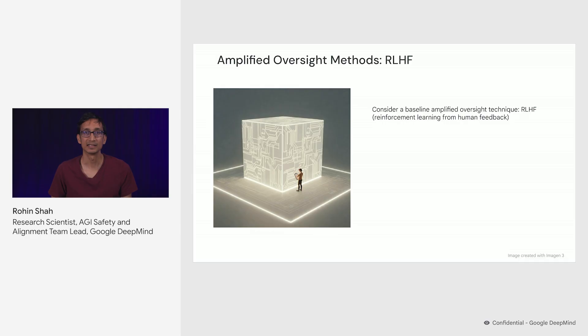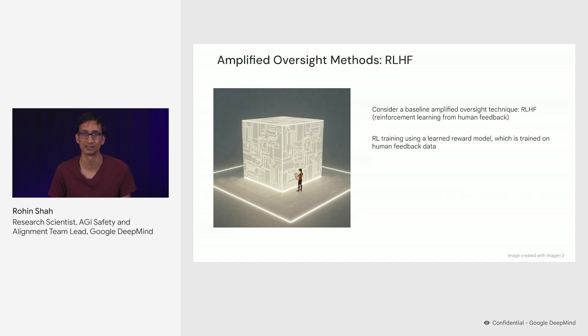So let's consider a baseline method: Reinforcement Learning from Human Feedback, or RLHF. In RLHF, we first train a reward model on human feedback data, and then train our final AI system with Reinforcement Learning using rewards generated by the trained reward model. Many current frontier LLMs use some variety of RLHF, and for now, that works great.